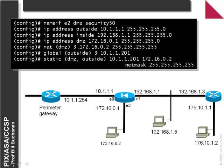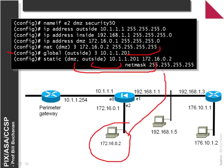Another example shows that we can set up NAT mapping, and then we can also set up a static mapping so that a node inside is seen from outside with a specific address.